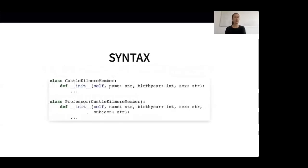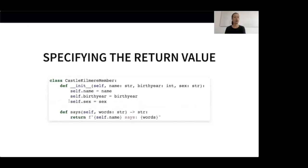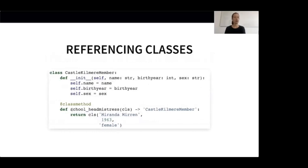The syntax is very easy. We just add a colon after each attribute and specify its type. For example, the variable name in our current constructor is a string, whereas the variable birth year is an integer. We can also specify the return value of a function — our says function takes a string of words as an input and returns a string, expressed by an arrow followed by the type of the return value followed by a colon. We can also reference more complex return types, for example classes. Our class method returns an instance of the CastleKilmier member class, which can be specified by using the name of the class as a type annotation for the return value.